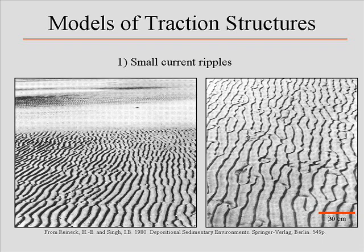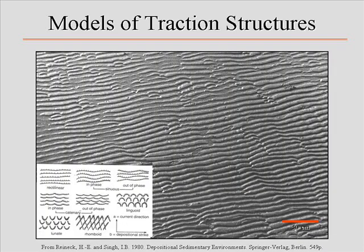Here are some additional ripples — nice straight-crested ripples that are a little more symmetrical. Symmetrical ripples normally mean there's a certain amount of wave influence, which probably means these are in the surf zone by a beach or on an exposed part of a beach.